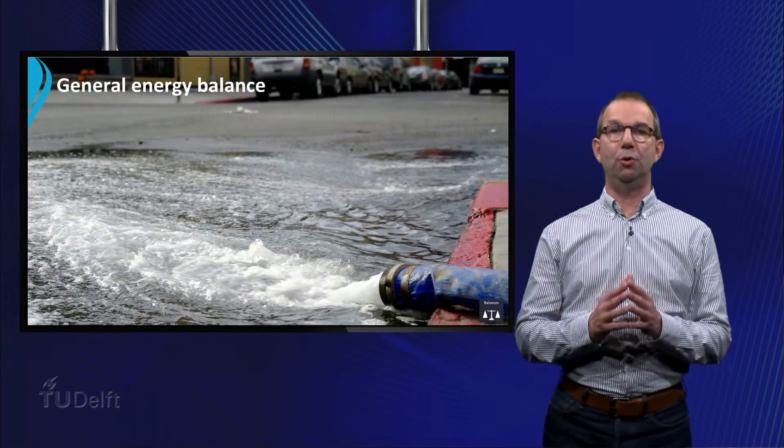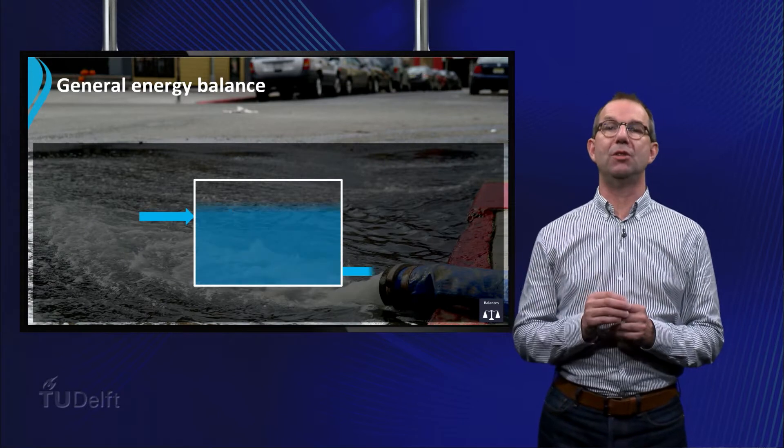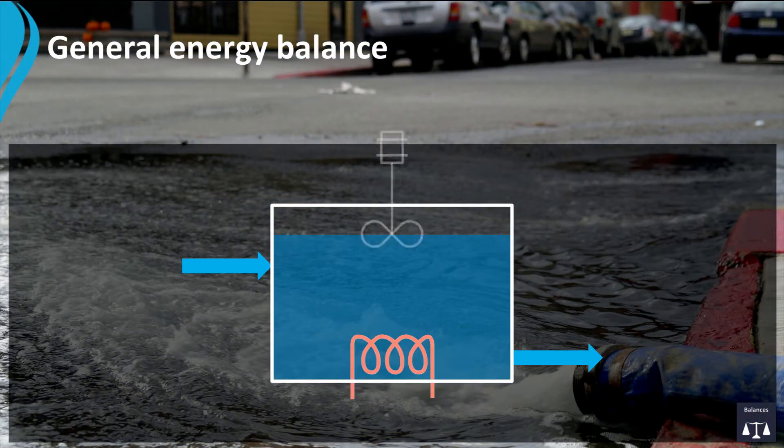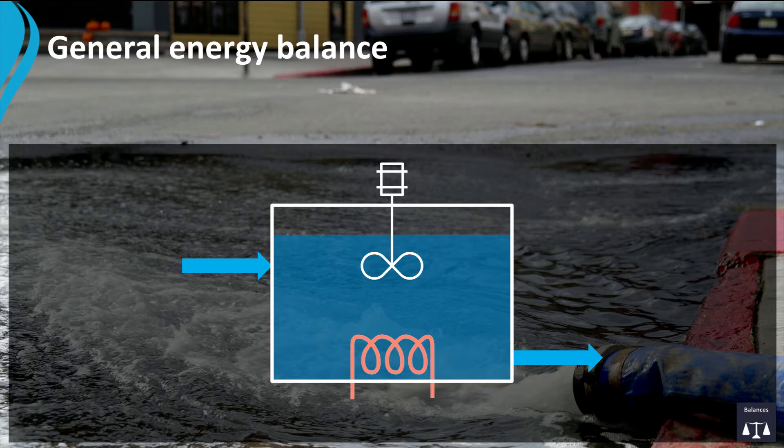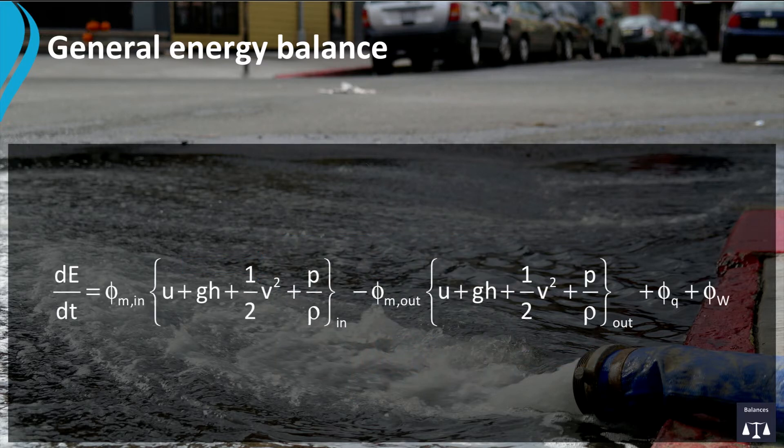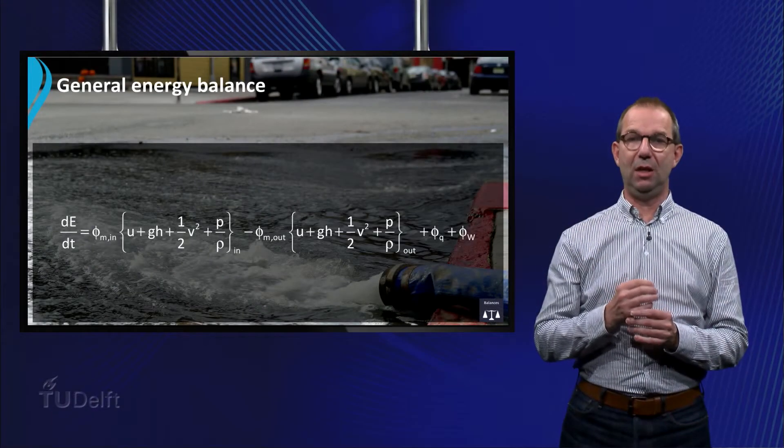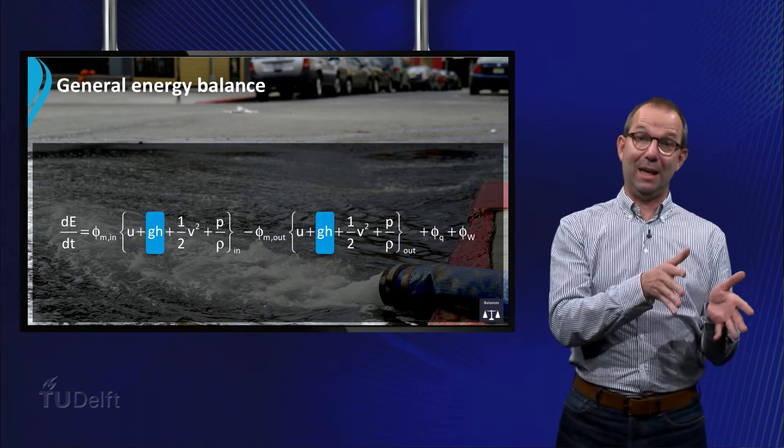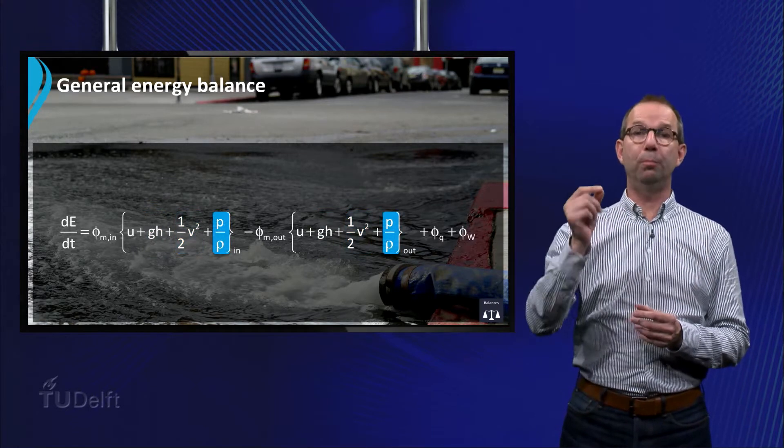In this course we introduced the energy balance for continuous processes where liquids flow in and out of a volume and where energy is added by a heater and work may be done on the system. The energy balance is given by dE/dt equals the inflow times the energy concentration minus the outflow times its energy concentration plus a heat flow φ_q into the system plus the work represented by φ_w. In this equation you can recognize in the in and outflows the internal energy u, the potential energy, the kinetic energy and the pressure energy, all per unit of mass.